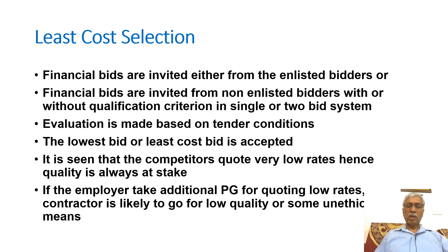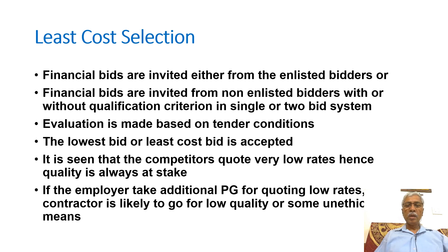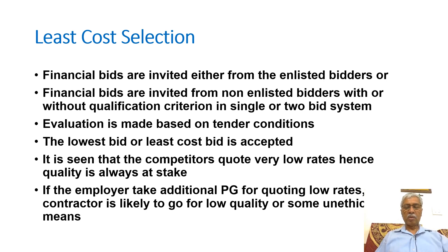In the two-bid system, the advantage is that criteria are evaluated based on documents received, and sometimes this can include inspection of ongoing or completed works. However, in the LCS method, competitors score by quoting lower rates, so quality is always at stake. This has been discussed at many forums where experts argue that quality must be ensured and LCS should not be accepted as-is.